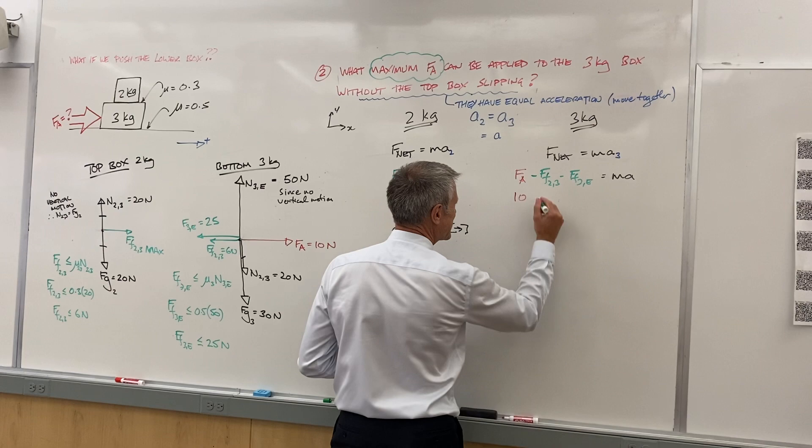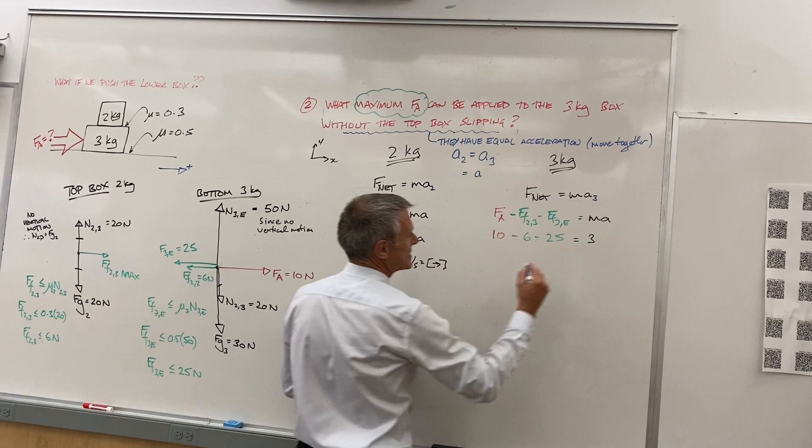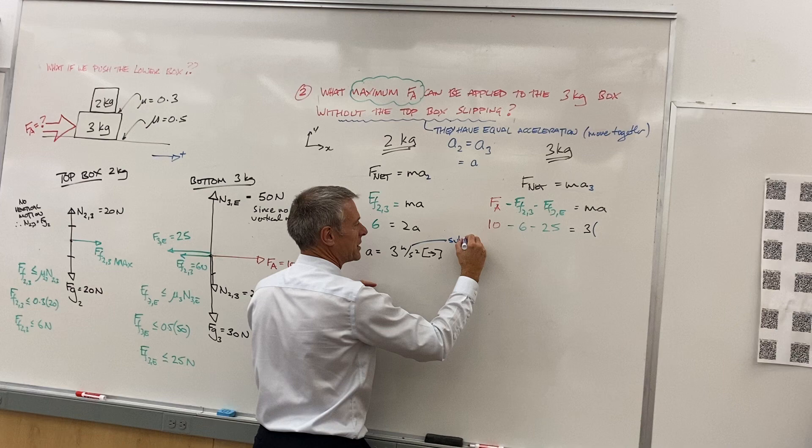Now we can put numbers in, and we've got 10 minus 6 minus 25 equals the mass of 3 kilogram times the A. The A, we said, has to be the same. So that's going to be my, from over here, this is my sub and solve.